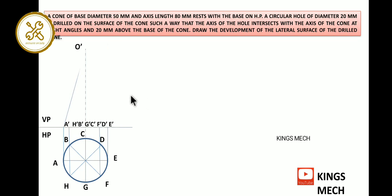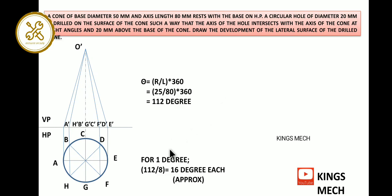After that, we have to go for theta. For finding the value of theta, the formula is R by L into 360. The value of R is 25, the diameter is 50 so R is 25. The value of length is 80. Dividing, we get 112 degrees. For 1 degree, convert it to 8 parts, so 112 divided by 8 equals 16 degrees each, approximately.